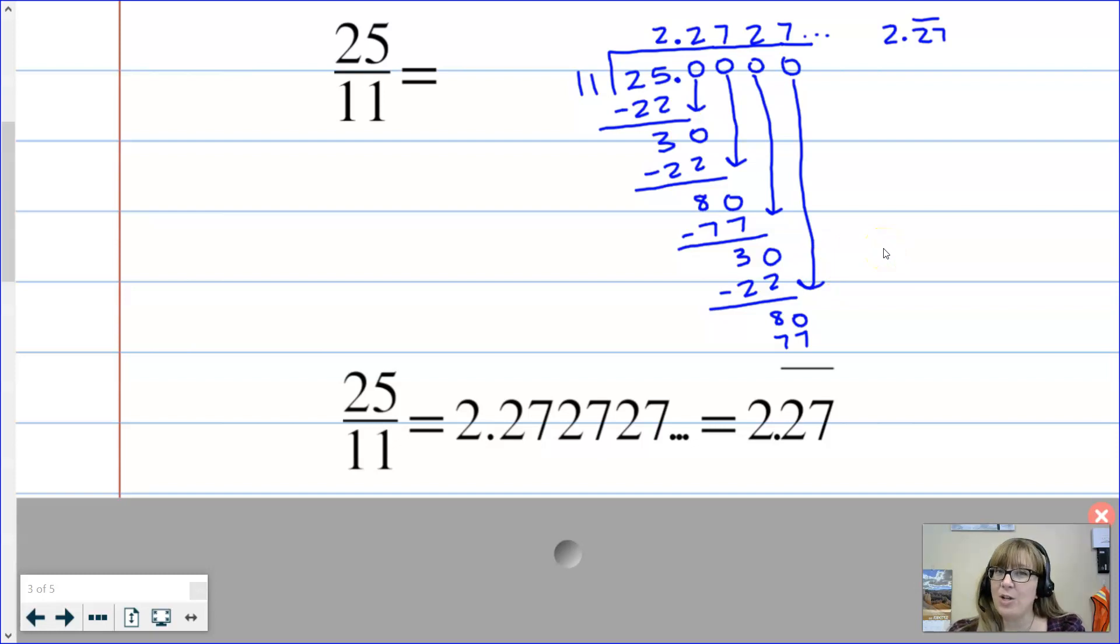When we're doing this long division and once we realized that it was a repeating decimal, we didn't need to continue to do that division anymore because we already saw that pattern that was repeating, and that's what math practice 8 is all about. It says look for and express regularity in repeated reasoning. We had this repetition so we recognized what was going to continue happening and we're not going to keep wasting any more of our time.